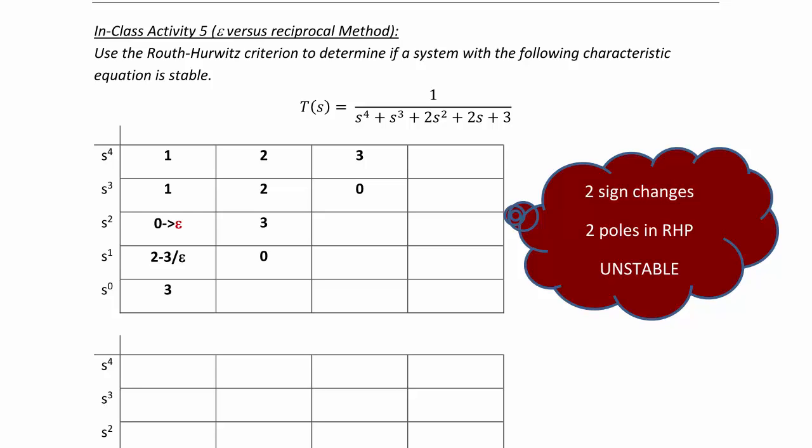The first row is one, two, three. The second row would be one, two. And then b1 would give us a zero and b2 would give us a three.